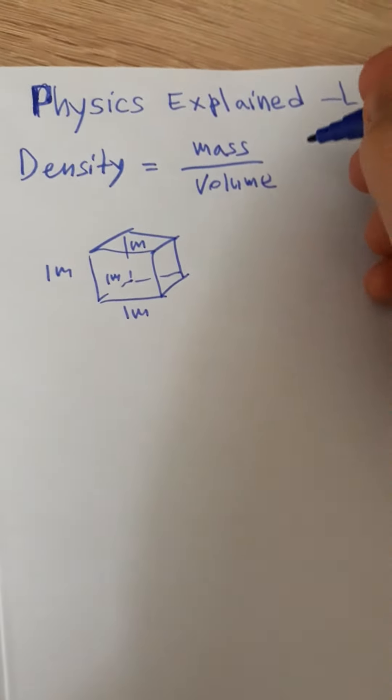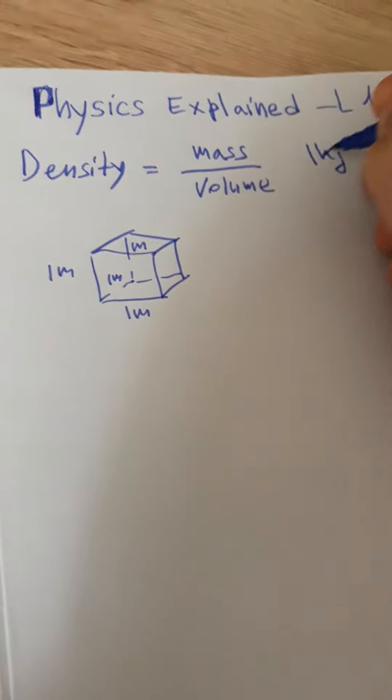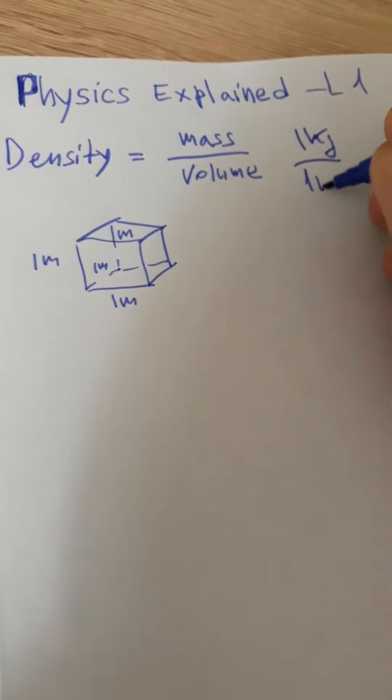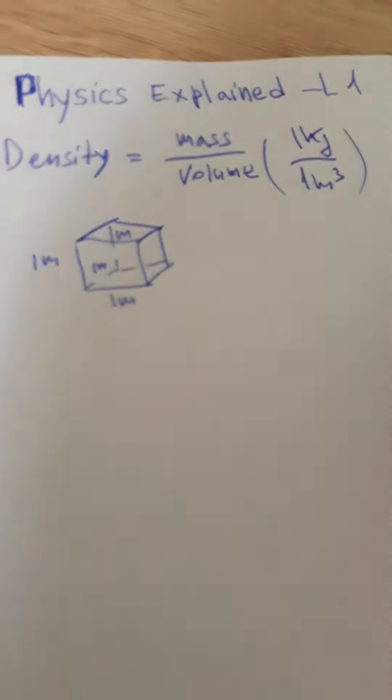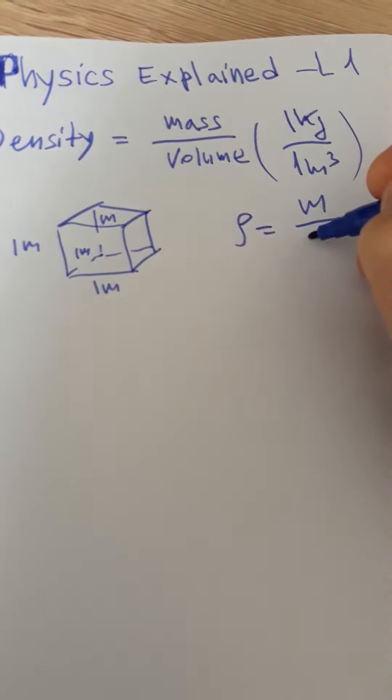So that mass of 1 kilo over 1 meter cubic is the unit. So the density is rho equals m over volume.